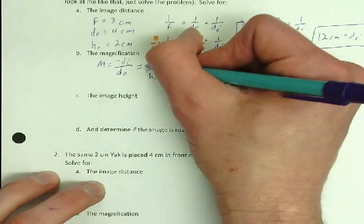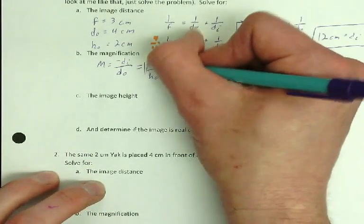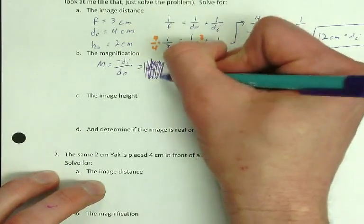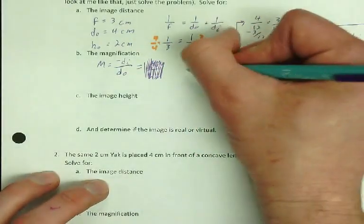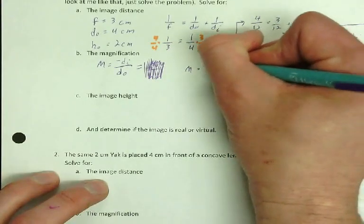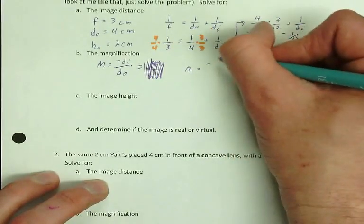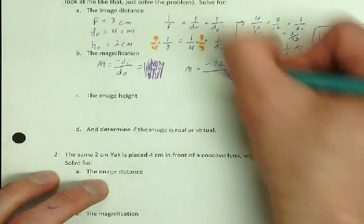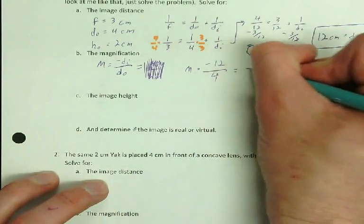So all I have to do is use those to solve. I don't know HI. I do know HO, but that's not enough. So I'm just going to get rid of the HOHI business and just do this. M equals negative DI. DI, we just got to be 12 over DO. DO is 4. Magnification is negative 3.